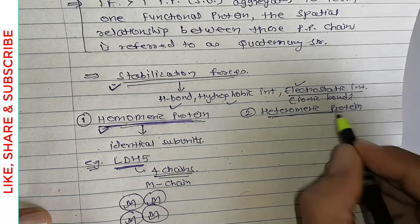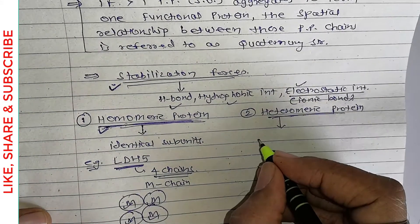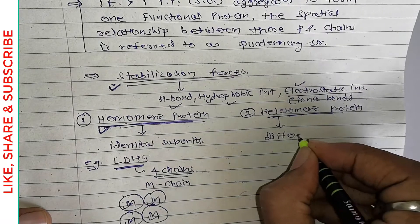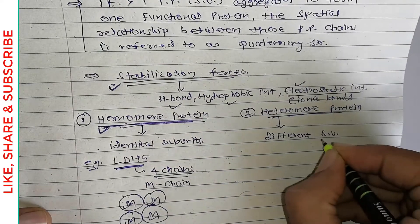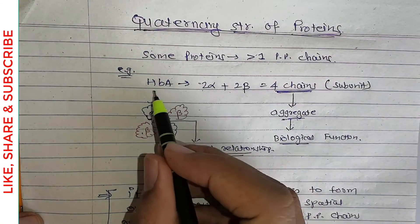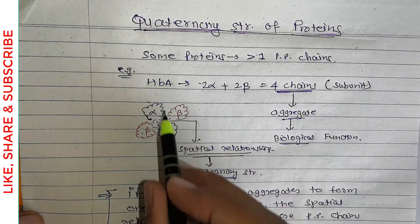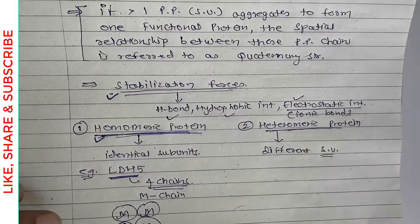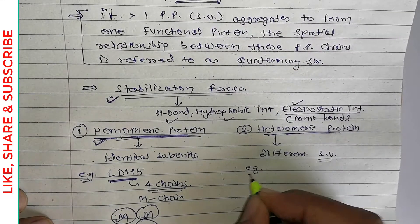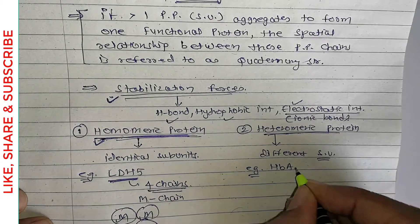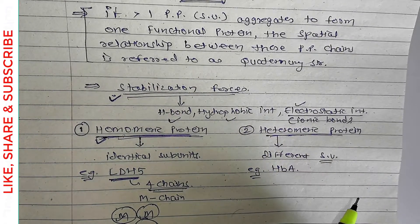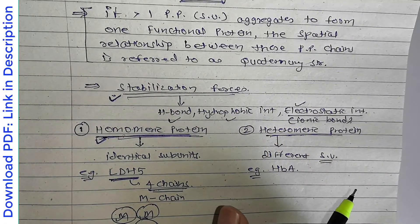Heteromeric protein is the opposite of homomeric protein — it has different subunits. The example we already covered is adult hemoglobin, because it has more than one type of subunit — two alpha and two beta chains.